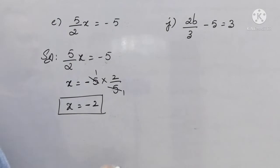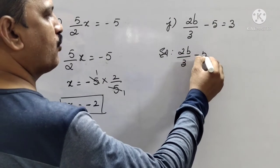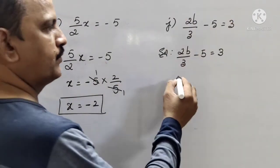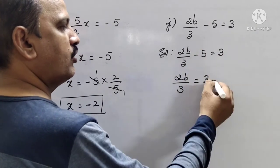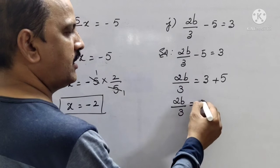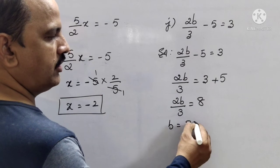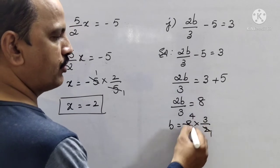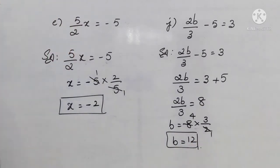Now coming to the j-bit: 2b by 3 minus 5 equals to 3. First, send minus 5 to that side — it becomes plus 5. So, 2b by 3 equals to 3 plus 5, which is 8. Now, b equals to 8 into 3 by 2 — the 2b by 3 will go as 3 by 2 reciprocal. So, 2 fours — b equals to 4 times 3, which is 12. So, 12 is the solution.